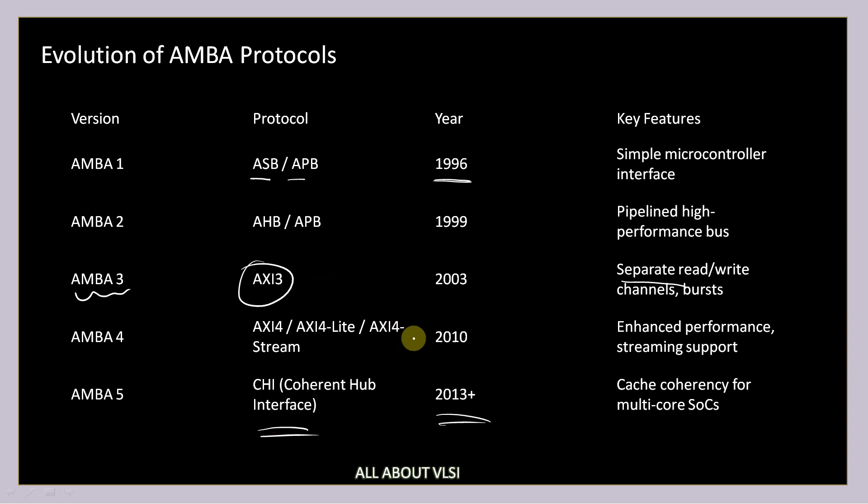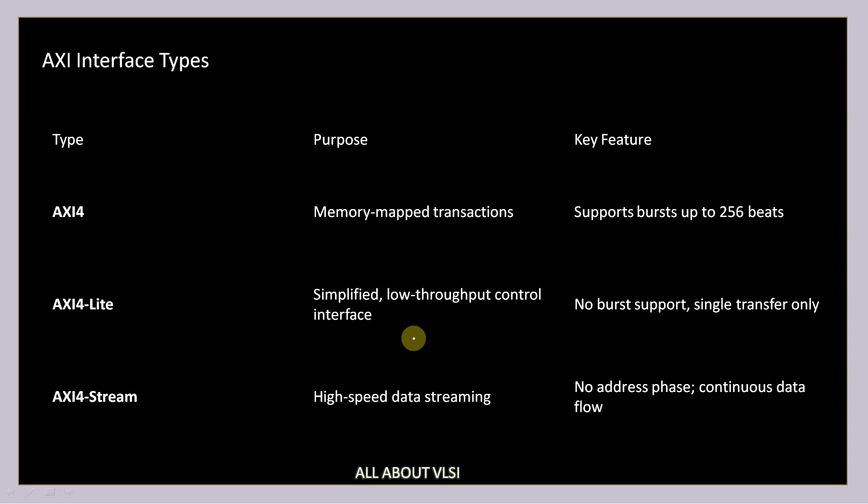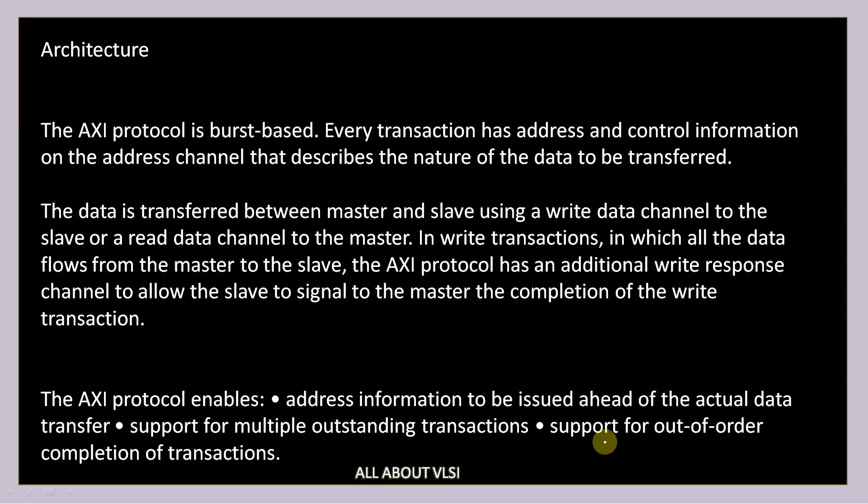In AXI there are different types: AXI4 supports memory-mapped transactions with bursts up to 256 beats. AXI4-Lite is a simplified, low-throughput control interface with no burst support — single transfer only. AXI4-Stream is designed for high-speed data streaming with no address phase and continuous data flow.